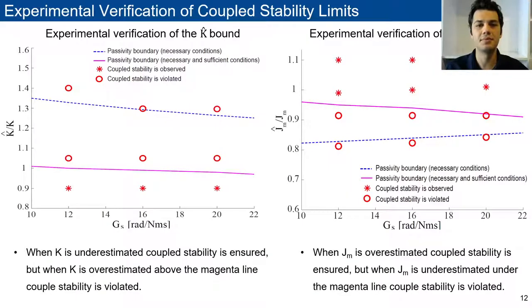This plot summarizes the results of the coupled stability experiments. In the figures, the magenta line represents the necessary and sufficient conditions, and the experimental results verify the validity of the passivity limits.